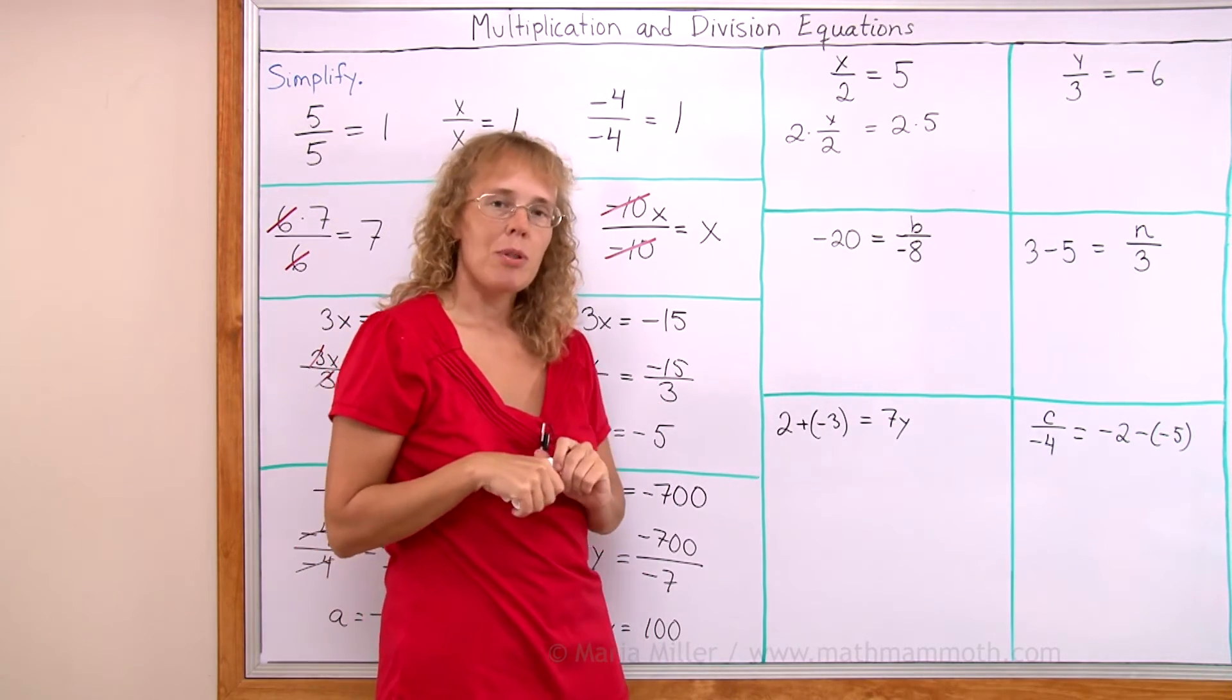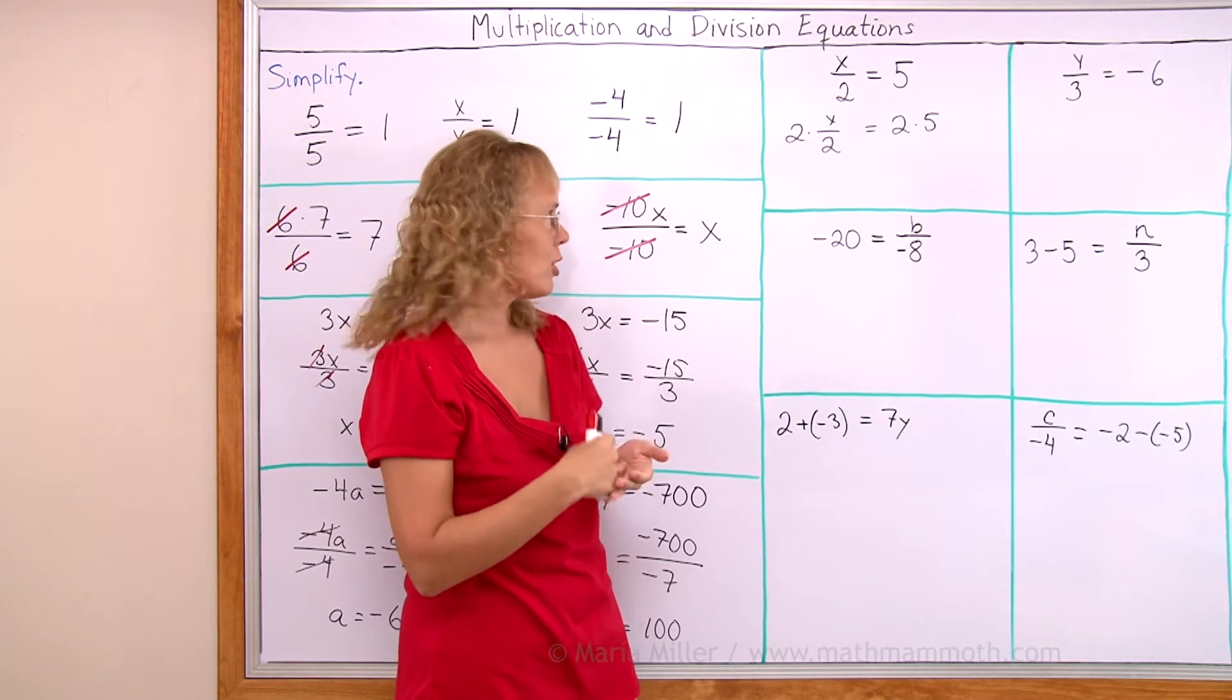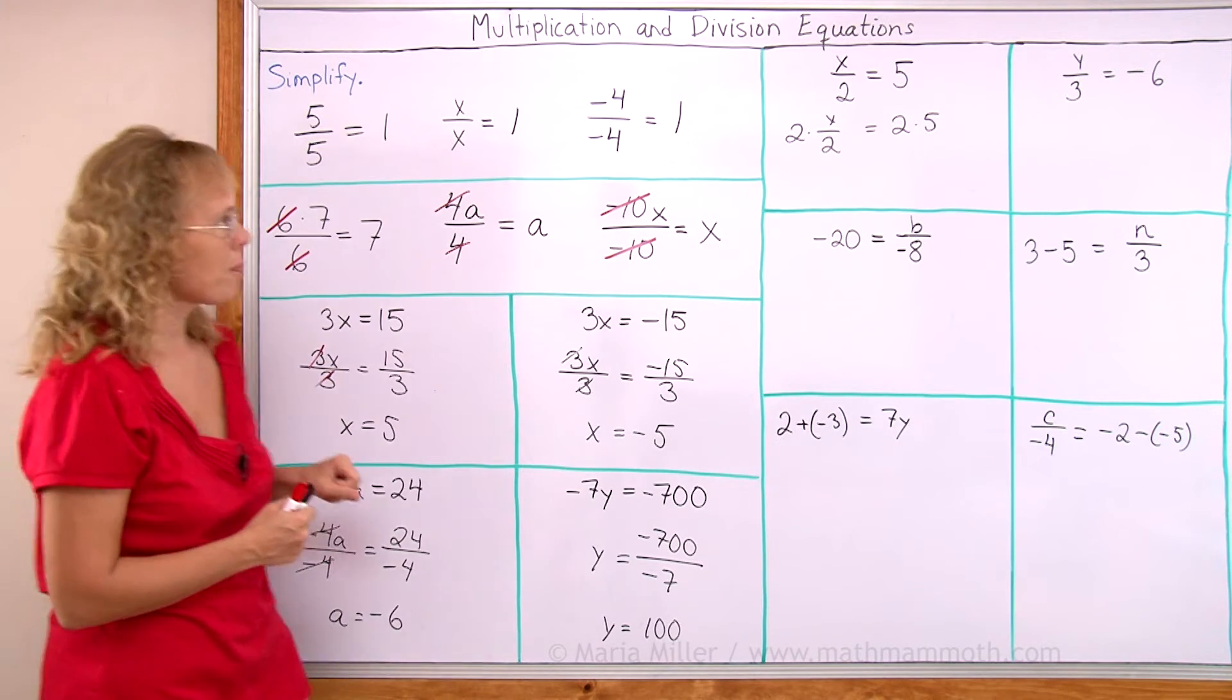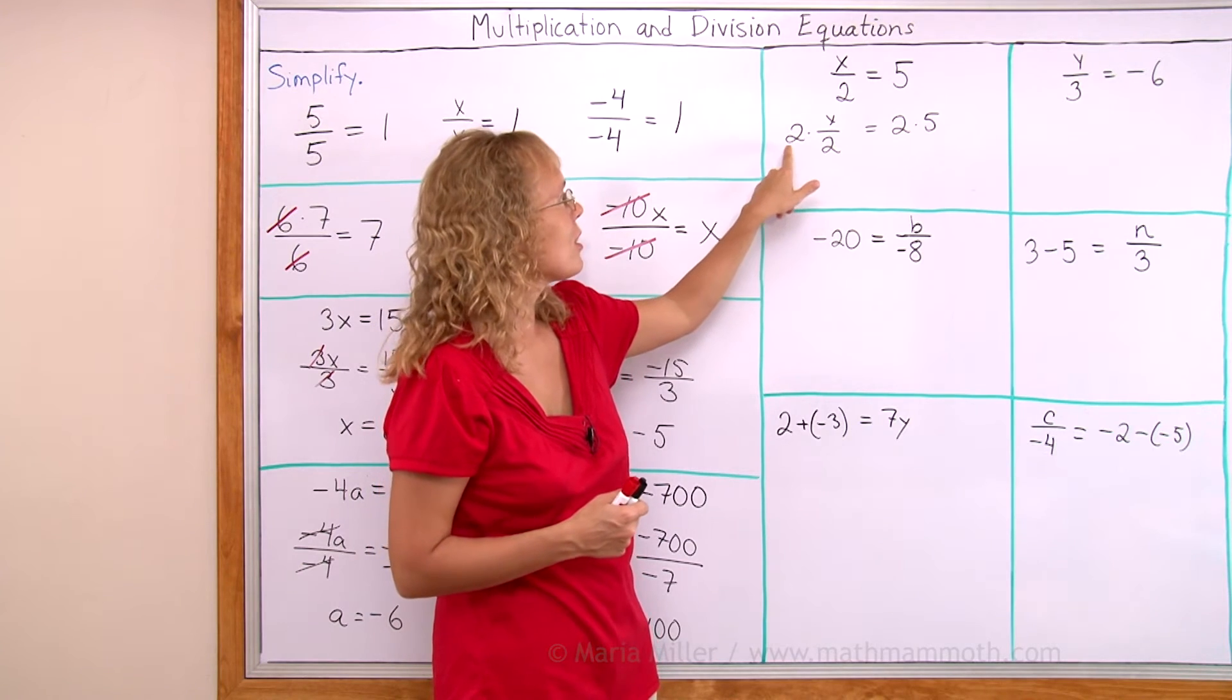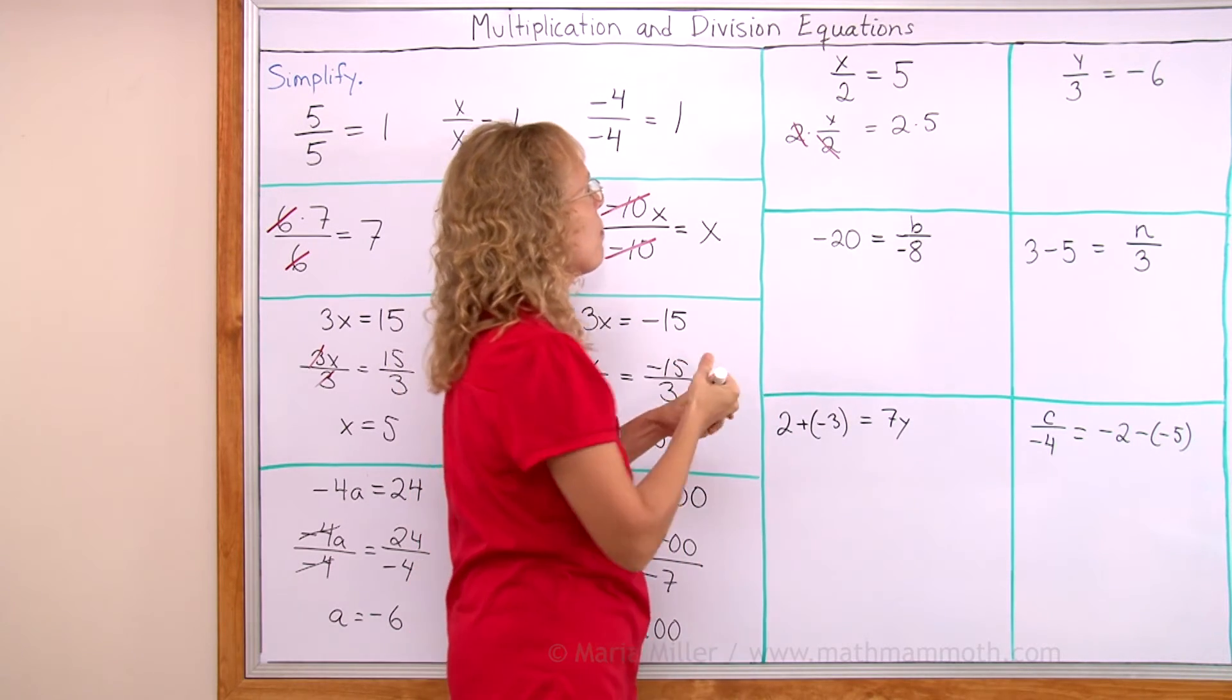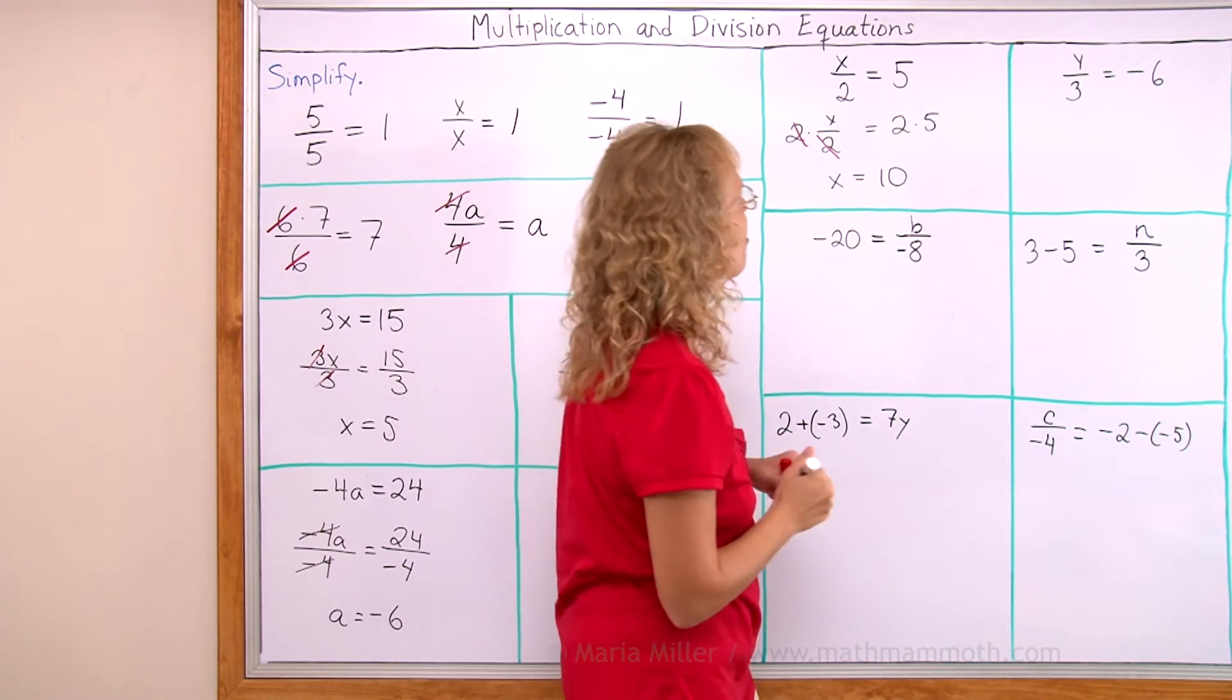And now, maybe you remember from fraction multiplication or somewhere, that 2 times x over 2 is the same as 2 times x over 2. It will be exactly like this, but just with 2. 2 times x over 2. Either way, the 2 and 2 cancel out. Okay? Because it is multiplying by 2 and divided by 2. These cancel out, leaving x alone. And then x equals here. You calculate this. It is 10. Okay? As expected. I know it's a very simple equation.